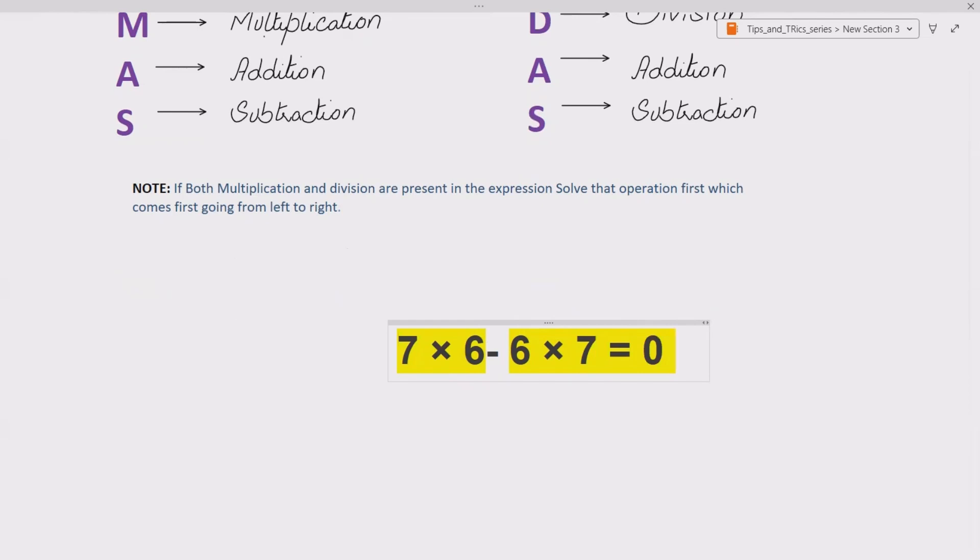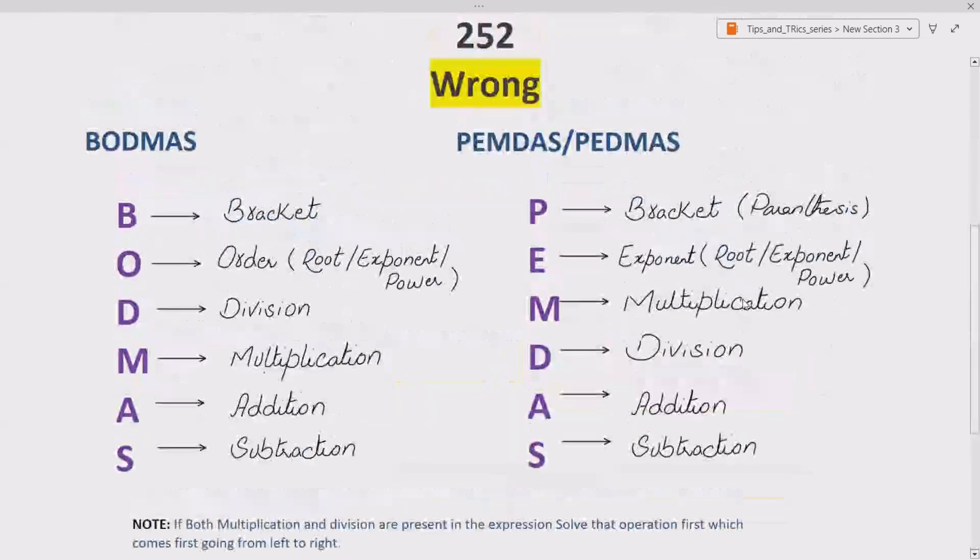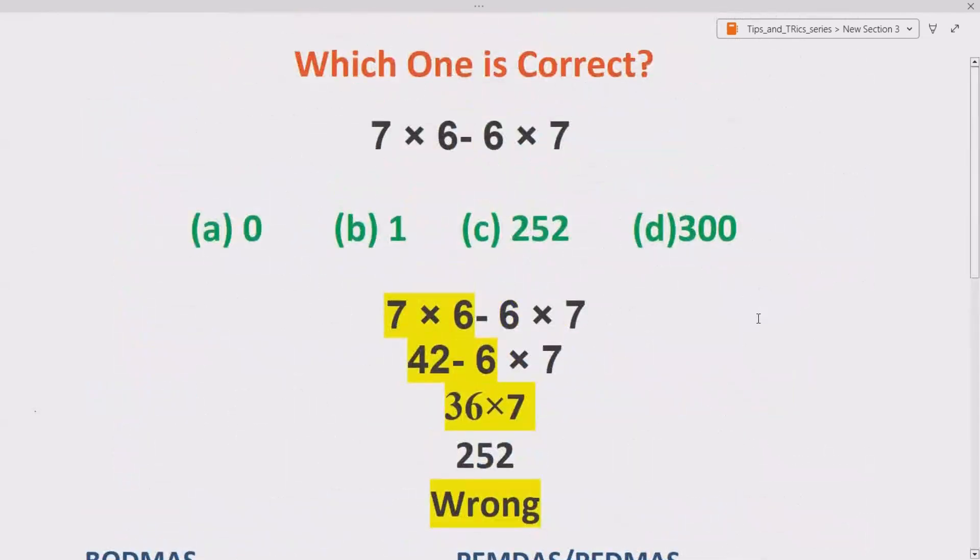As you can see, 7 × 6 gives us 42, and then we have minus. Now 6 × 7 again is 42, and then 42 - 42 gives you 0. I hope you enjoyed this video. If you like this video, share with your friends and colleagues. And in the next video, bye bye. Remember, the right answer is 0.